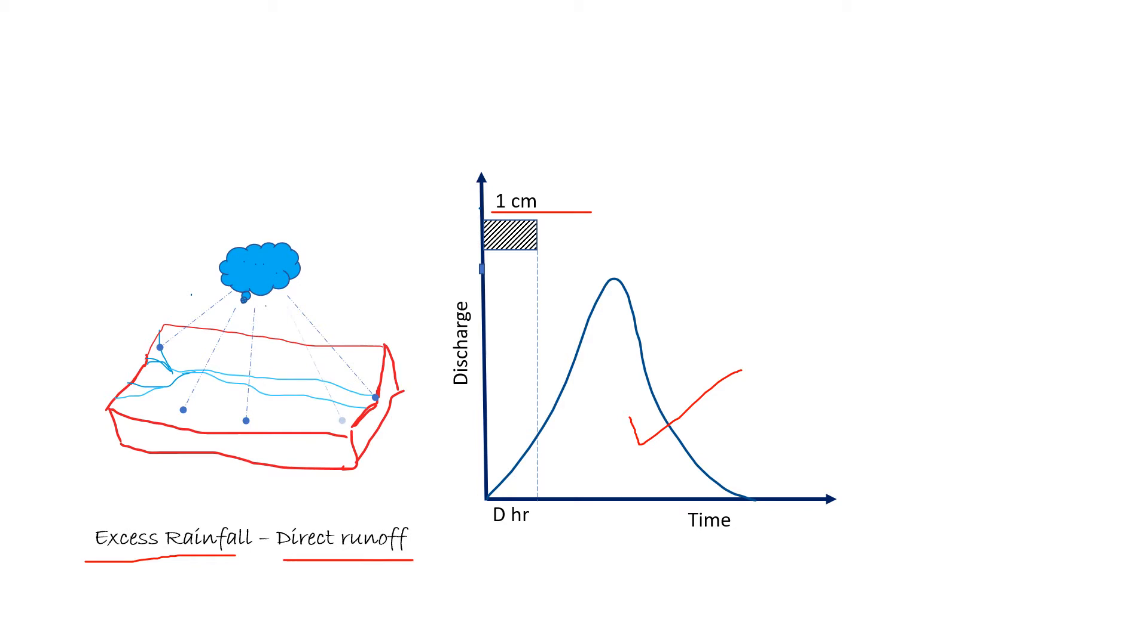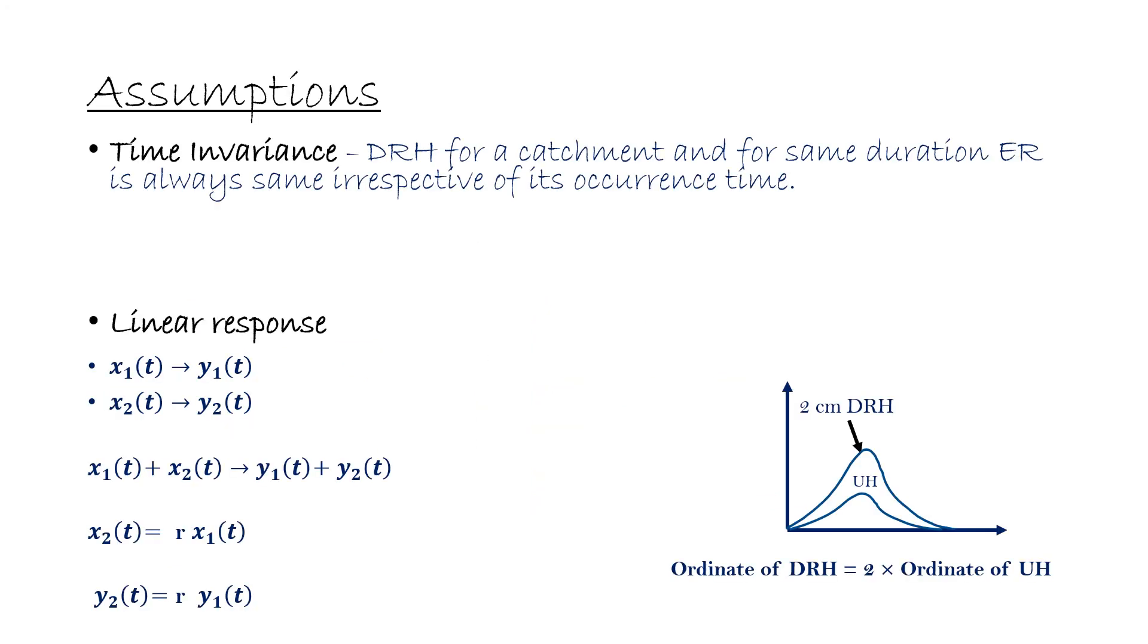Now let's see assumptions which are taken in the case of unit hydrograph. There are two assumptions. First one is time invariance, which means direct runoff hydrograph for a catchment and for the same duration of rainfall is always same irrespective of its occurrence time. So whether the rainfall has occurred in the morning or in the evening, if it is having same duration and it is happening in the same catchment area, then DRH will be same, direct runoff hydrograph will be same.